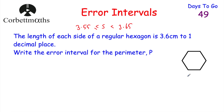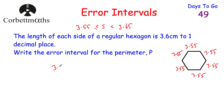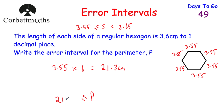Since there are six equal sides, we can multiply by six to get the perimeter. If each side is 3.55 centimetres, then 3.55 × 6 = 21.3 centimetres. So the perimeter p must be greater than or equal to 21.3 centimetres — that's the smallest possible perimeter.